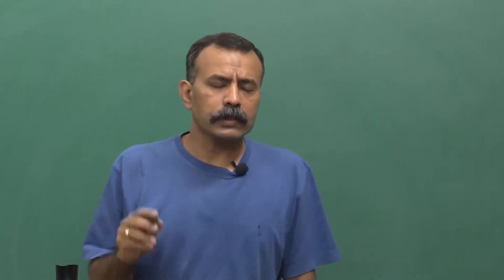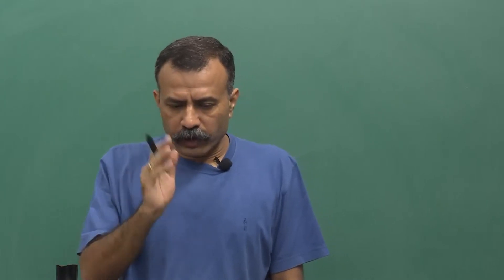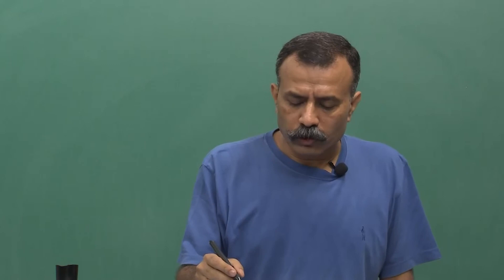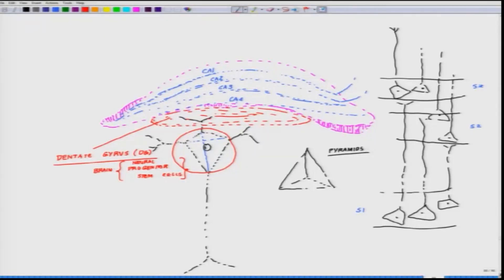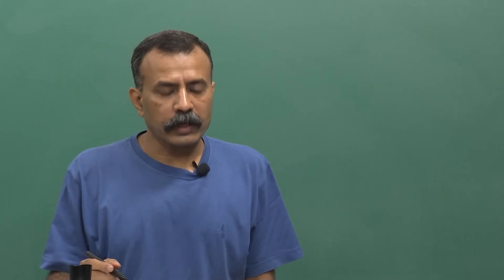Coming back to where this whole discussion started: after covering this anatomy, I will now move on to talk about what happens next. There are three aspects we will deal with here: we will talk about epilepsy with respect to this structure, next we will talk about Alzheimer's, and third we will talk about memory. All three topics will be addressed in relation to this hippocampal structure, which is why I am spending significant time explaining this anatomy and its significance.